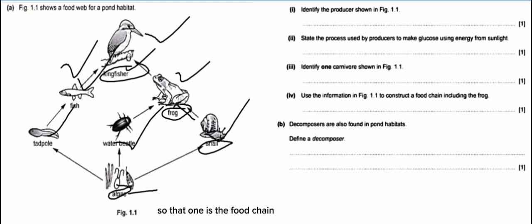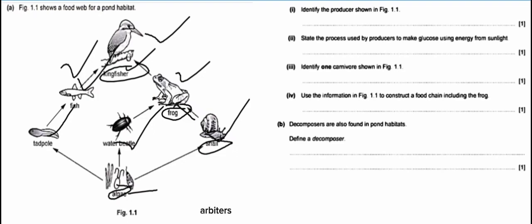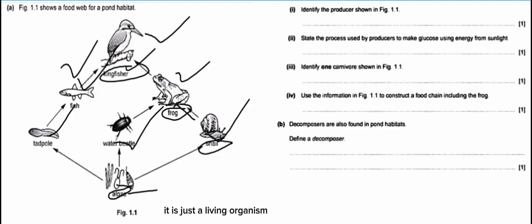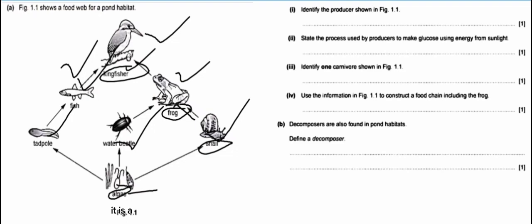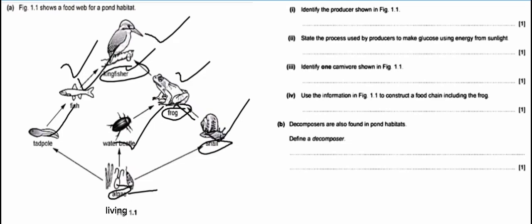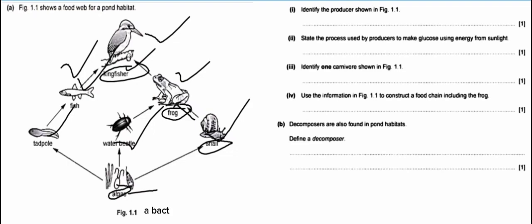Part B says decomposers are also found in pond habitats — define a decomposer. A decomposer is a living organism that causes the decaying of dead living organisms. An example would be fungi or bacteria. Those living organisms cause decaying to other living organisms.